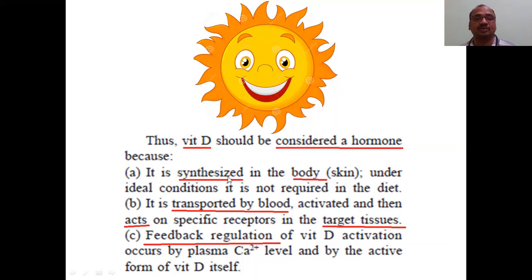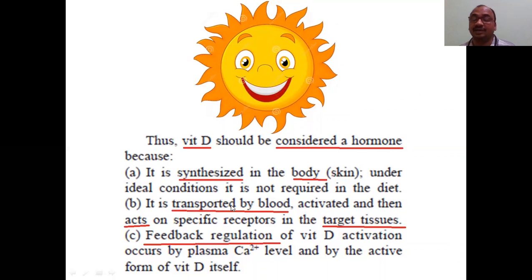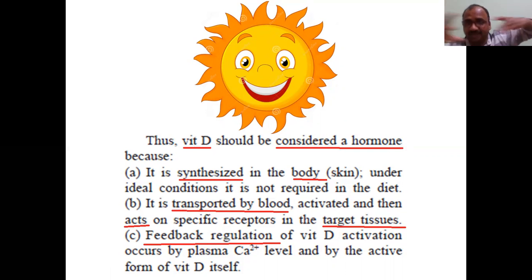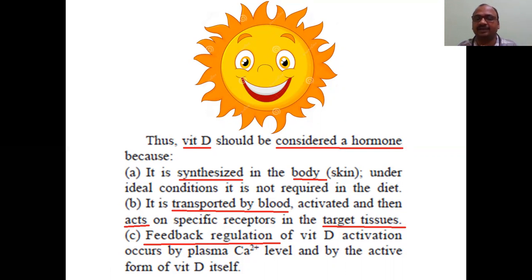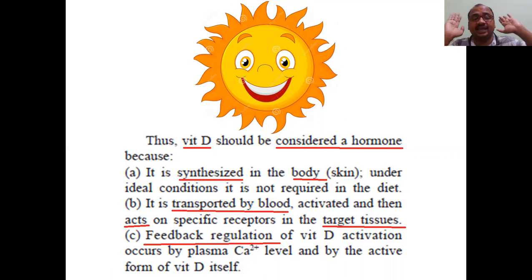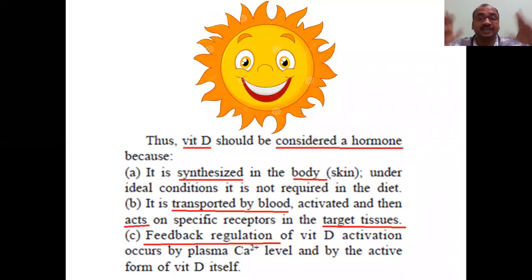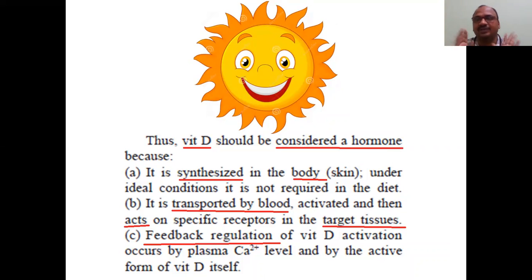Why are we calling it a hormone? Because it is synthesized in the body — in the skin — under ideal conditions. It is transported by the blood, just like hormones. Hormones are also secreted somewhere and transported by the blood to target cells. Vitamin D is also transported by the blood and it acts on the target tissue. And just like hormones, this also has feedback regulation — when there is excess of vitamin D, signals go to the body to create less vitamin D.